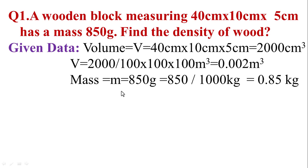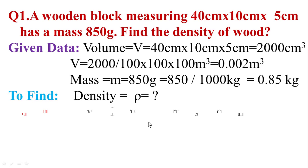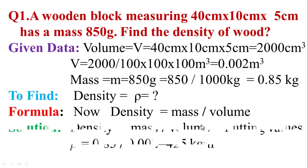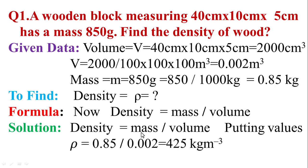Also, mass m is equal to 850 grams. To convert grams to kilograms, divide by 1000. So 850 divided by 1000 is equal to 0.85 kg. Now we can find the density. The formula is: density is equal to mass divided by volume. Density (rho) is equal to 0.85 divided by 0.002. The final answer is 425 kg per m³.